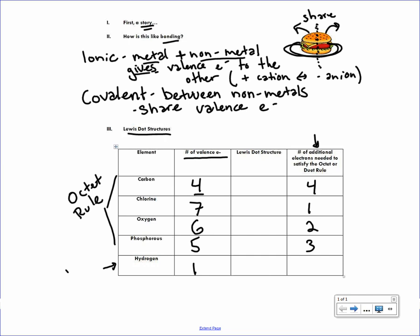Now hydrogen, remember, is the exception along with helium. These two elements follow the duet rule. They just need two valence electrons in order to be satisfied, in order to be stable. So if hydrogen starts out with one, it's only going to need one more.